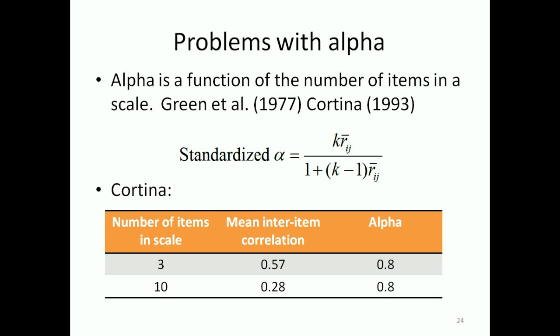So here we can see that we can find an alpha of 0.8 when the number of items on the scale increases from 3 to 10 and the mean inter-item correlation drops from 0.57 to 0.28. Now this is very strange because you might expect the mean inter-item correlation to increase as alpha increases, but it doesn't.